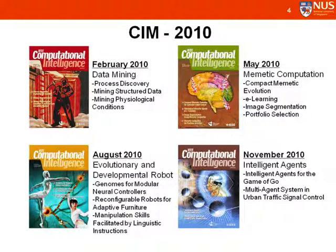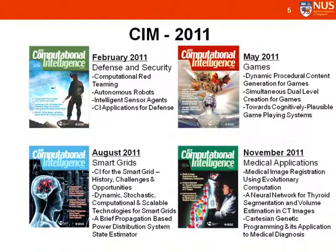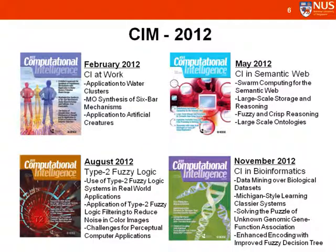Here are some of the issues published since 2010. We had a data mining issue in February 2010, membrane computation in May, evolutionary and developmental robotics in August 2010, and intelligent agents in November 2010. In 2011 we had four issues on defense and security, games, smart grids, and medical applications. Last year we published issues on CI in networks — a collection of feature articles on real-world applications — CI in Semantic Web in May, Type 2 fuzzy logic in August, and CI in bioinformatics in the November issue.